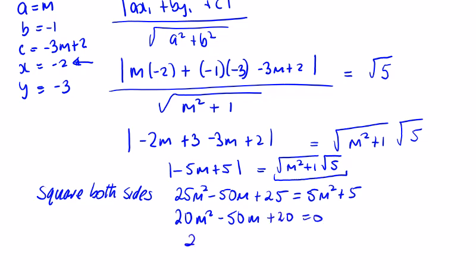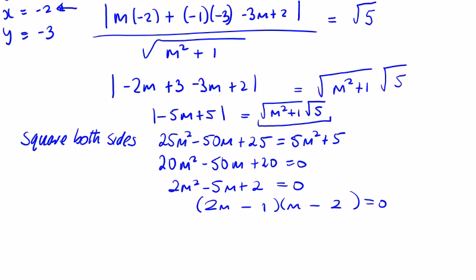Bringing across: 20m² minus 50m plus 20 equals 0. Dividing by 10: 2m² minus 5m plus 2 equals 0. Factoring gives m equals 1/2 or m equals −2. But they asked for the equations of the two lines, so we substitute back.